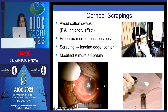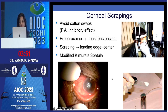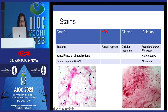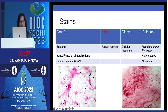Scrapes should be done from the leading edge and center of the ulcer, classically using a blade. The most important stain for microbial keratitis is KOH, as it immediately tells you whether to start antifungal therapy. Gram stain and acid-fast stain can also be done. Acid-fast stain is for MAN — Mycobacteria, Actinomyces, and Nocardia.